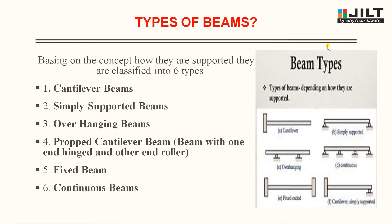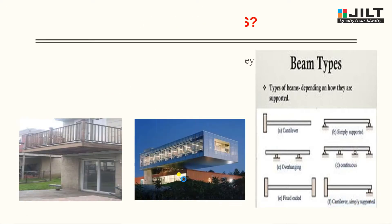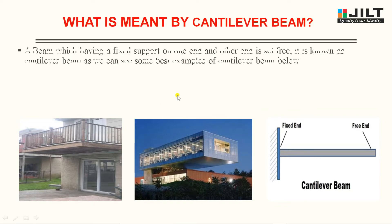You can view the overall image summarizing all types. Cantilever: one end fixed, other end free. Simply supported: one end is hinge support, other end is roller support. Overhanging beam: resting on two supports with an extension. Continuous beam: resting on more than two or three supports. Fixed beam: both ends are fixed. Propped cantilever beam: one end fixed, one end roller support.